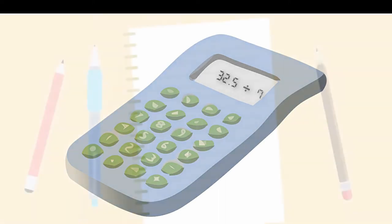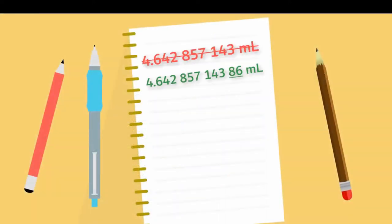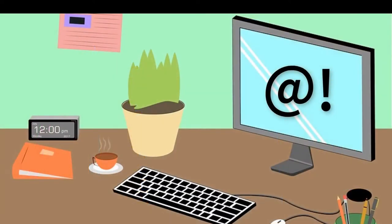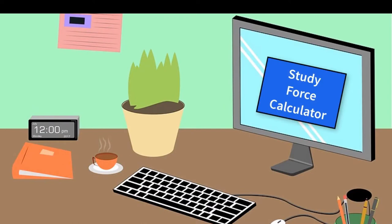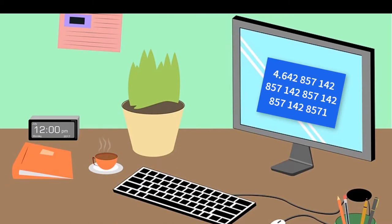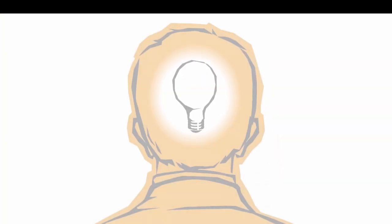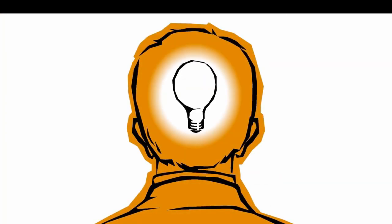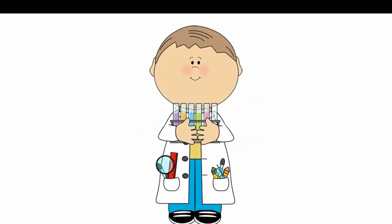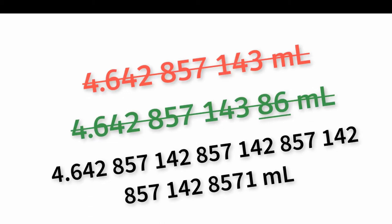Double-checking your calculation, you find it still comes out to the same number, and you decide to be more accurate by using more digits. Using a calculator with a larger display, you record a number that's even longer — with an extra 8.6 at the end. Again, an email arrives the next day encouraging a more accurate measurement. Frustrated, you use a calculator application on your PC and find the number is even more accurate. But why, as the technologist, have you made things worse?